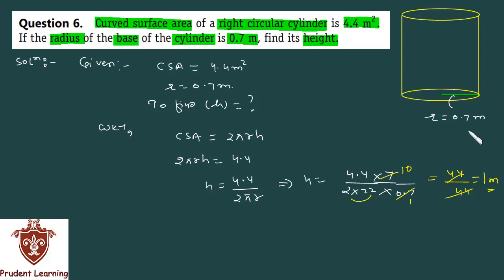Lekin unit kya hoga meter. Kyunki radius or area aapke paas meters meh tha. Area meter square mein. Hence the height of the right circular cylinder is 1 meter. So this completes our solution. Let us see the 7th problem.